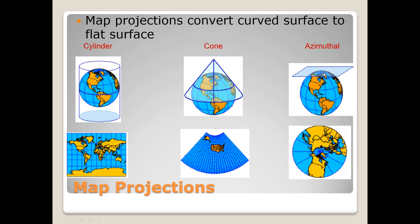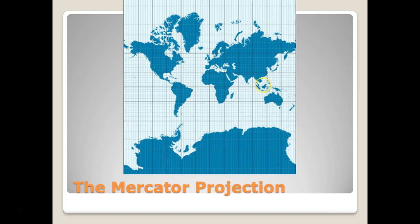Finally, we have an azimuthal projection. Instead of having a line of tangency as in the cylindrical and conical projections, we have a point of tangency. That point is where the map is most accurate, and as we move away from it, it becomes more distorted.